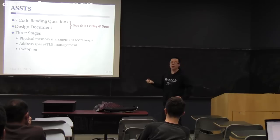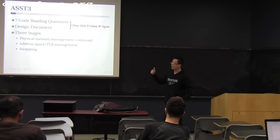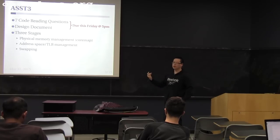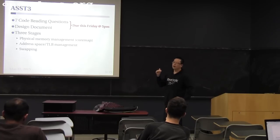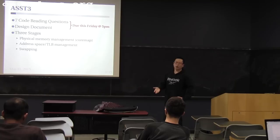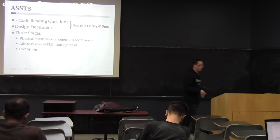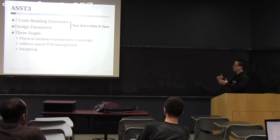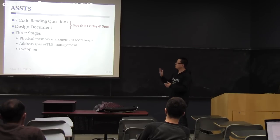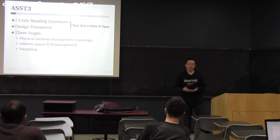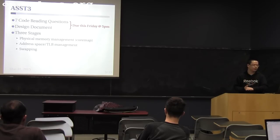These are the three stages of assignment three. You can do this incrementally, and functions from previous stages are used in later stages. In the first stage you design two main functions: allocate a physical page and free a physical page. In the second stage you design the user address space and page table, with one main function being VM fault — how to handle virtual memory page faults or TLB faults. In the third stage, the two main functions are swap out and swap in a page. You want to do this strictly in order: physical memory first, then user address space, then swapping.